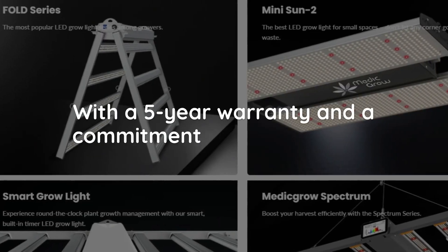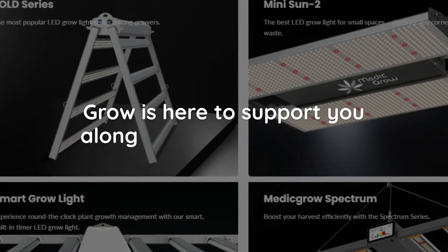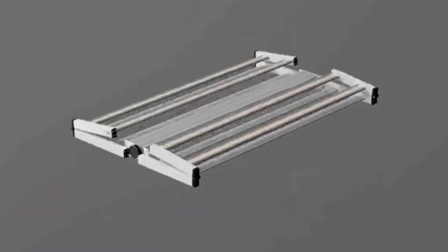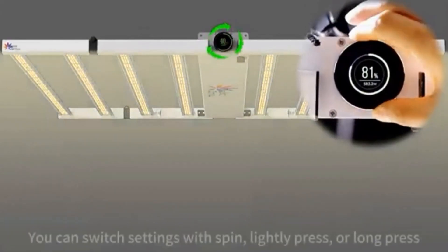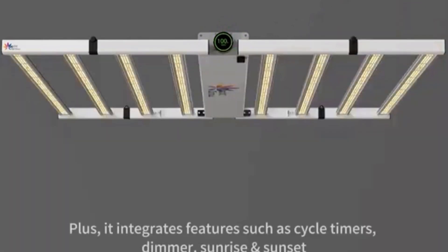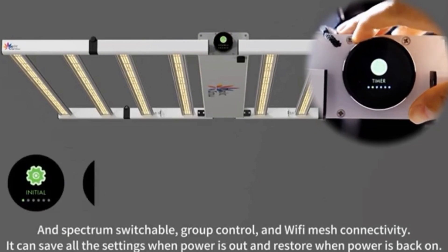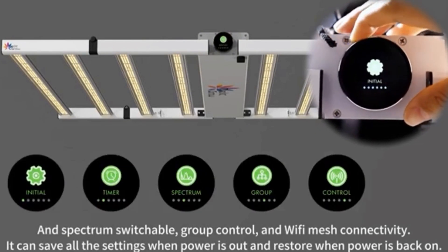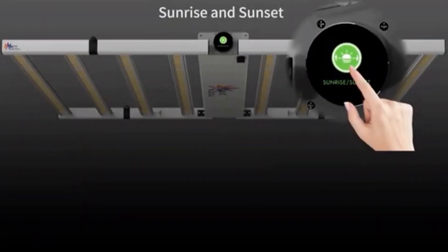With a five-year warranty and a commitment to quality, MedicGrow is here to support you along your growing journey. Stick around until the end of the video for a chance to win an NEO 780 Smart Aura Control System. Don't forget to check out MedicGrow's full range of advanced grow lights at their website MedicGrow.com. They are also offering some promo codes which I will attach to the summary of this video, so be sure to check it out.